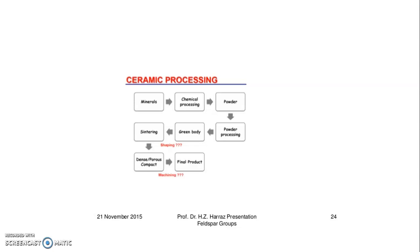During chemical processing, the material is converted into powder, like nanoparticles. Then the powder goes through powder processing and is formed into a green body, sometimes called a green plate. After the sintering process, it is made into dense and porous particles. After machining, we get the final product of ceramics.